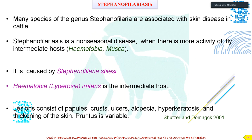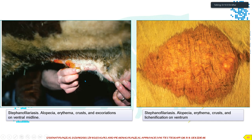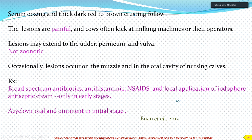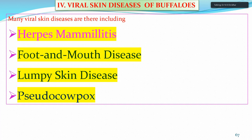Stephanofilariasis is a common non-seasonal disorder in buffaloes, with Haematobia as the intermediate host, caused by Stephanofilaria stilesi. Lesions consist of papules, crusts, ulcers, and alopecia, with serum oozing above thick dark-red-brown crusting; it is painful but non-zoonotic. Treatment is broad-spectrum anthelmintics, NSAIDs, local application of anthelmintic cream, acyclovir oral, and antihistamines in the initial stage, as per Annan et al. 2012.